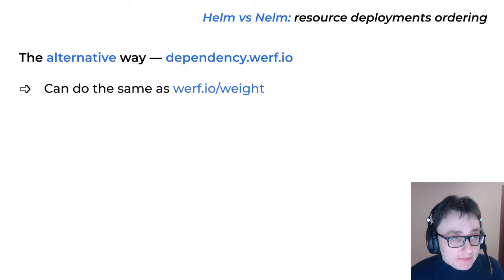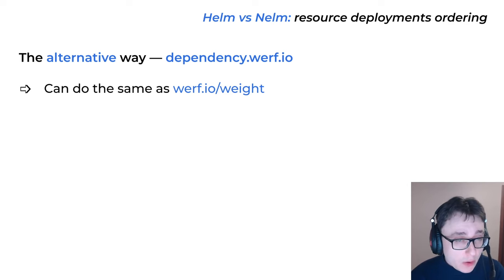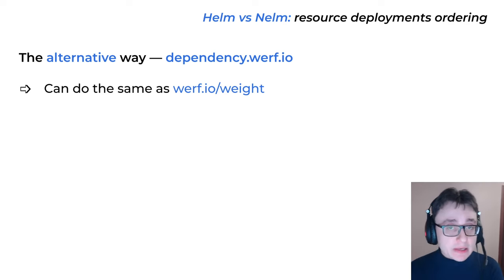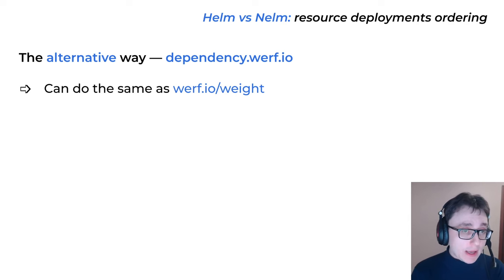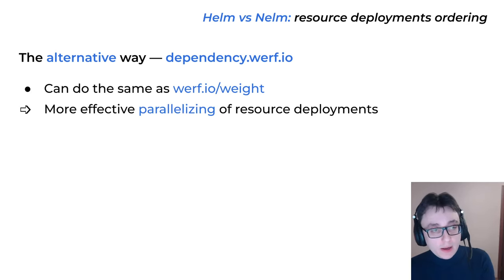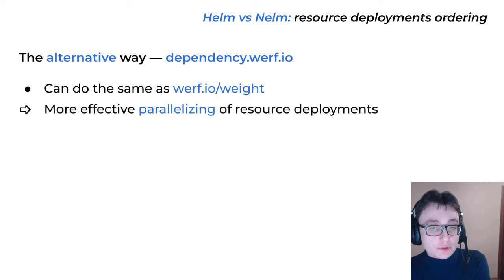We also have an alternative mechanism to specify the order of resources during deployment — what we call direct dependencies. It's also just a simple annotation: 'dependency.werf.io'. With this, you can achieve the same as with werf weights, but it can provide much more effective parallelization of resource deployments.